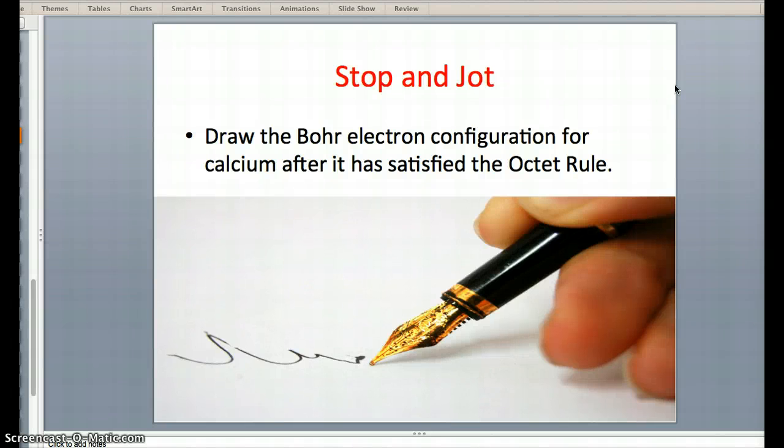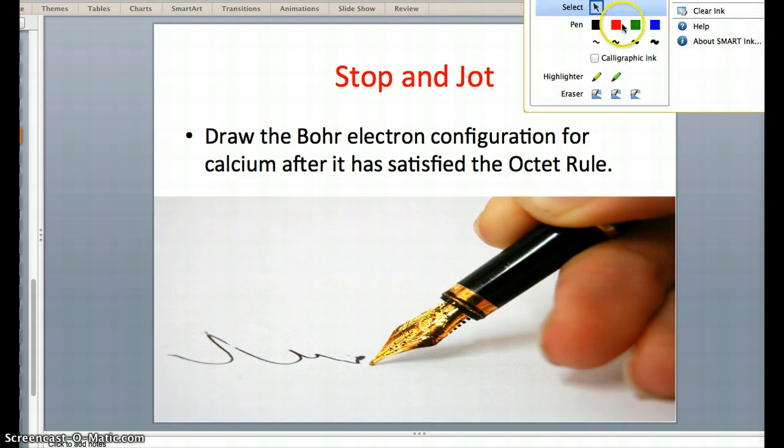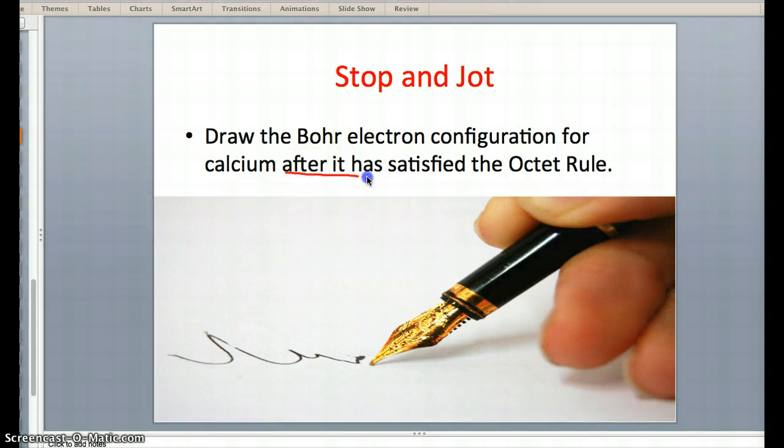Alright, up next we're drawing the Bohr electron configuration for calcium after it has satisfied the octet rule. Once again, the important part is that it's after it has satisfied the octet rule.